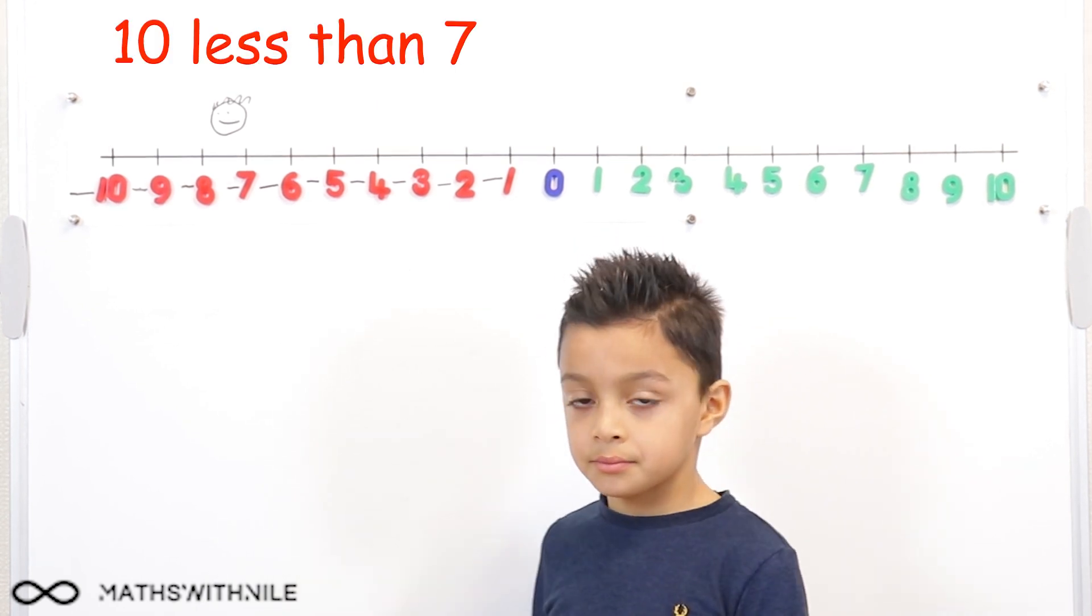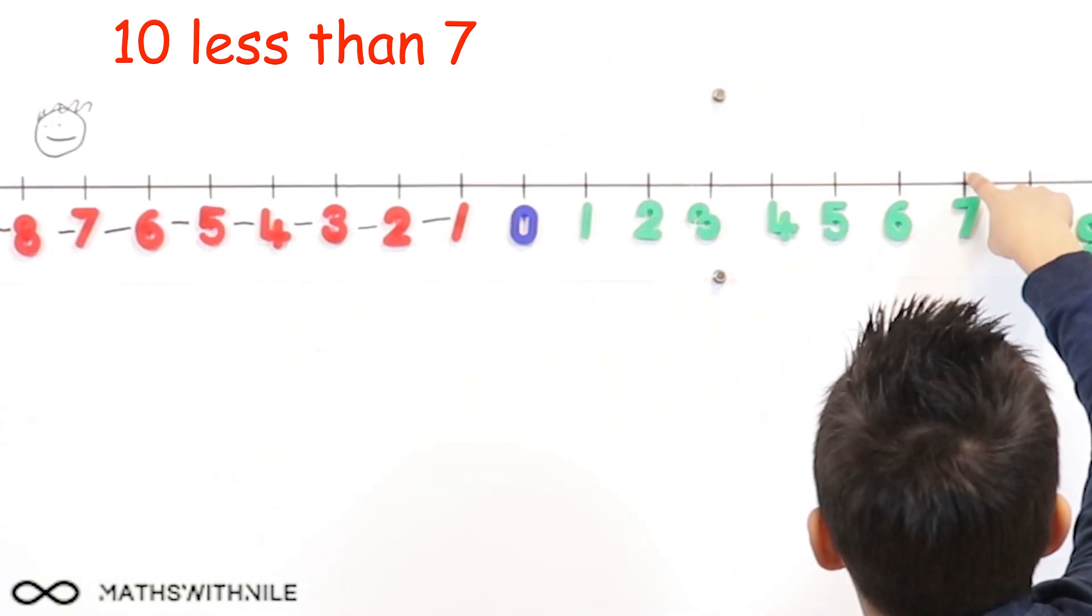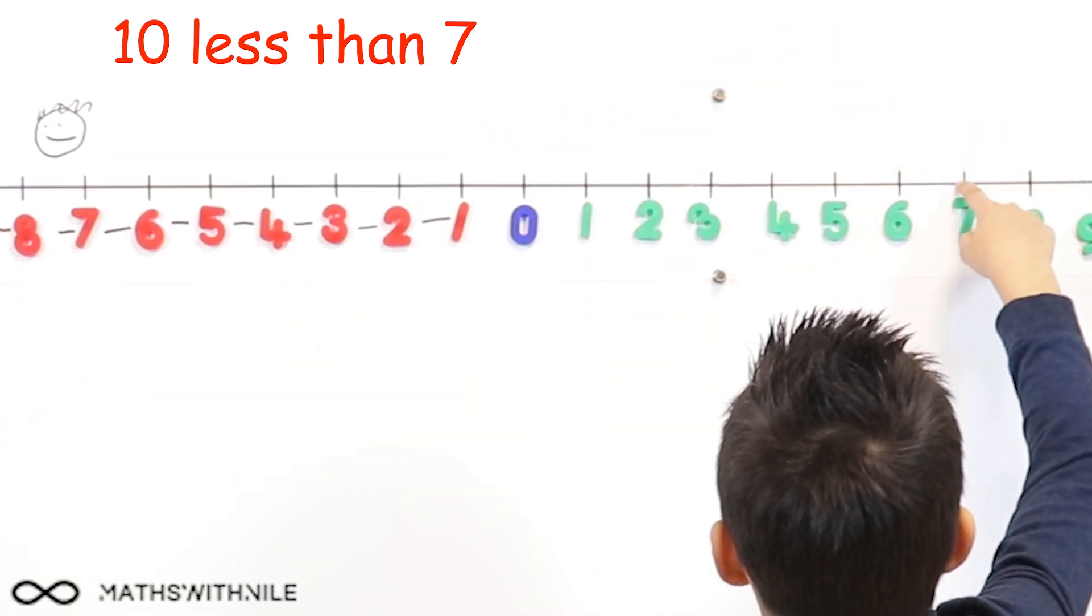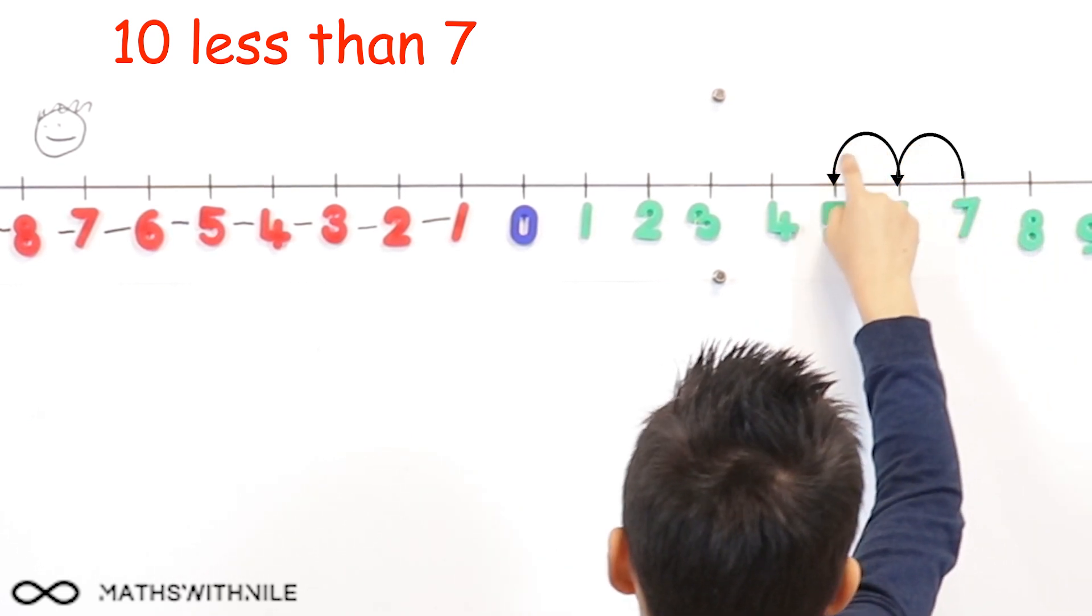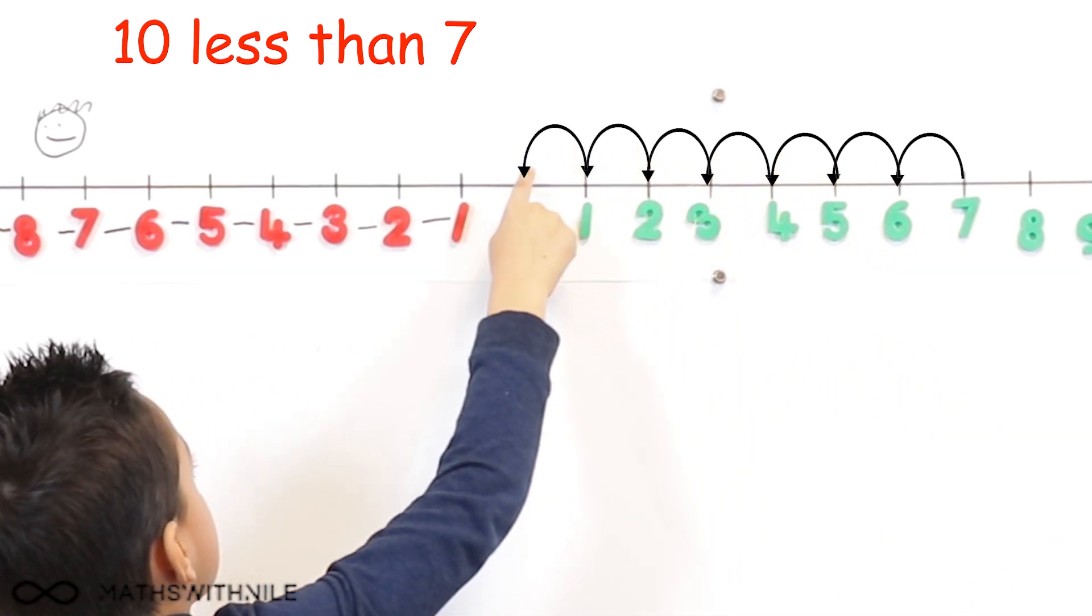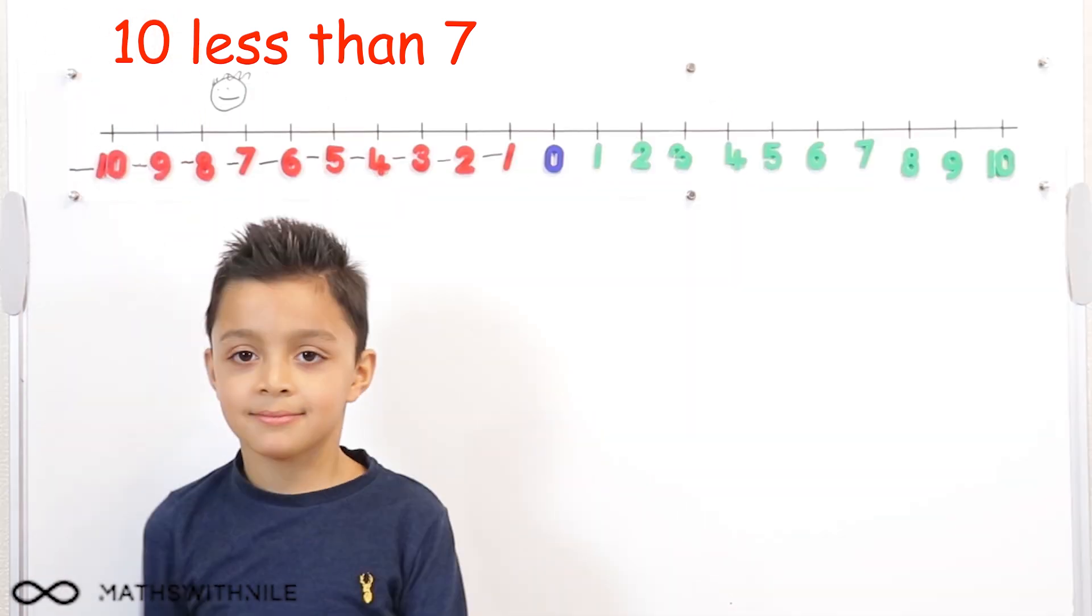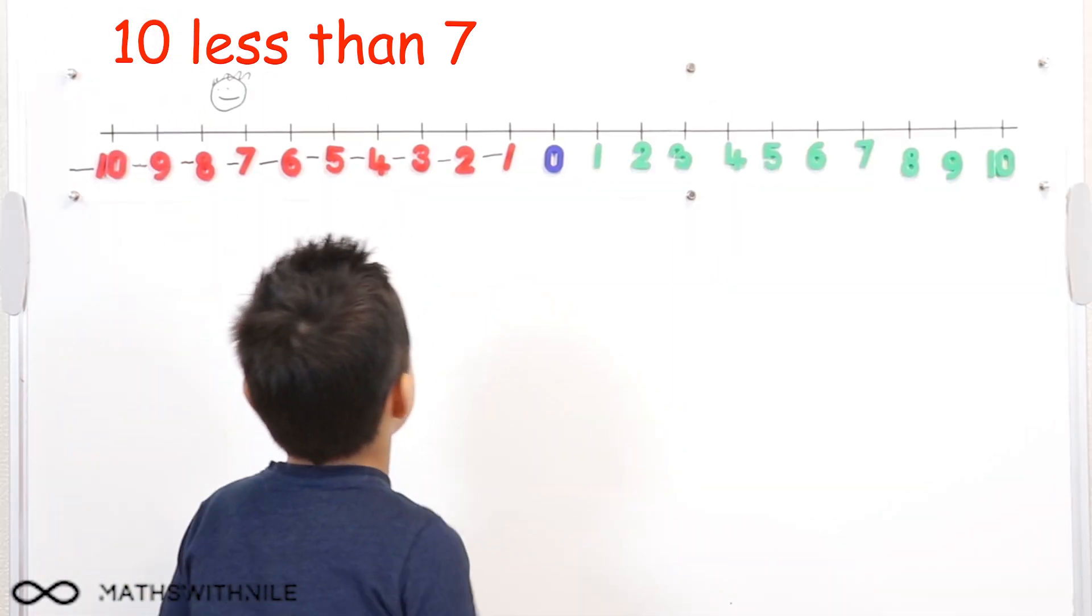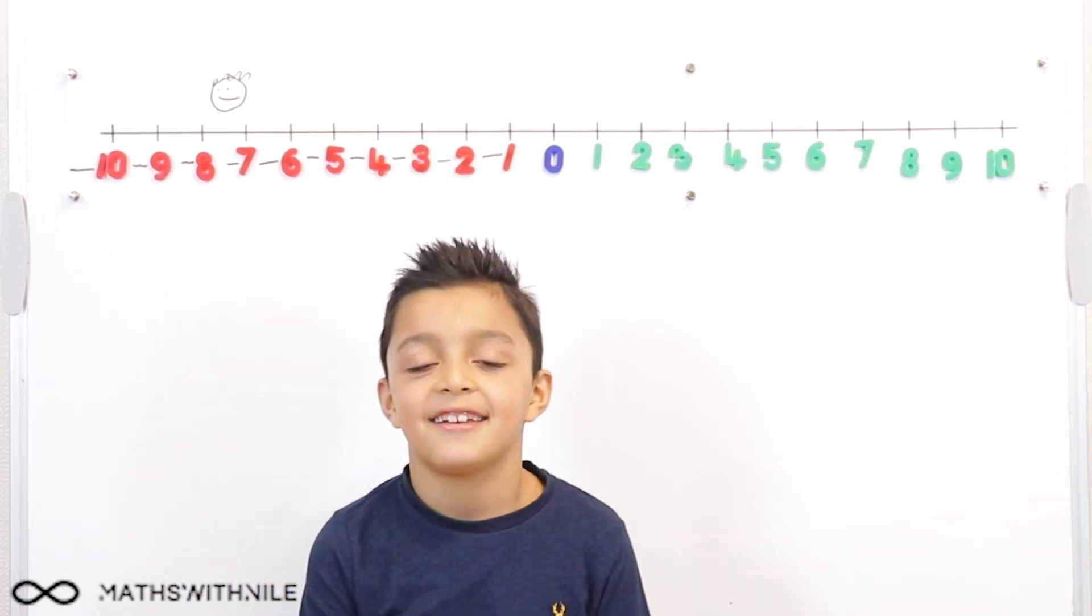Let's do one more. What is 10 less than 7? 10 less than 7. Take away 10, so we're counting down, not up. 1, 2, 3, 4, 5, 6, 7, 8, 9, 10. What's the answer? Minus 3. Brilliant.